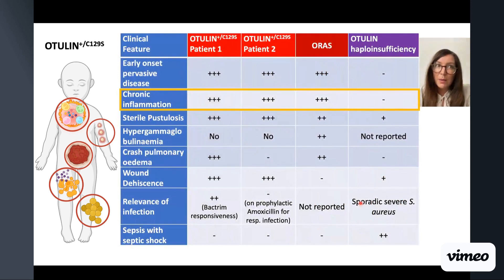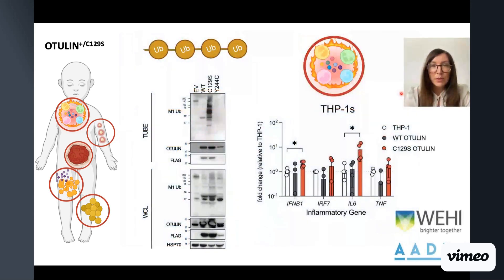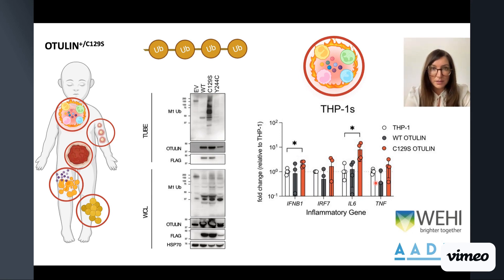However, our patients are heterozygous, and previous work by the Casanova lab found that heterozygous loss-of-function mutations in otulin are not sufficient to drive spontaneous inflammation. But we thought perhaps our variant might be a bit different. Indeed, exogenous expression of C129S — and not other loss-of-function mutations in otulin — was sufficient to drive accumulation of linear ubiquitin chains and inflammatory gene transcription in wild-type cells.